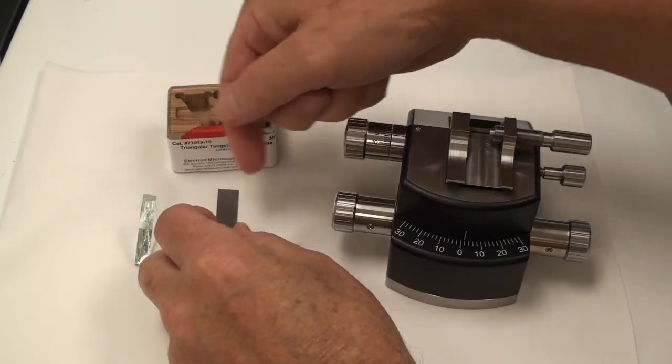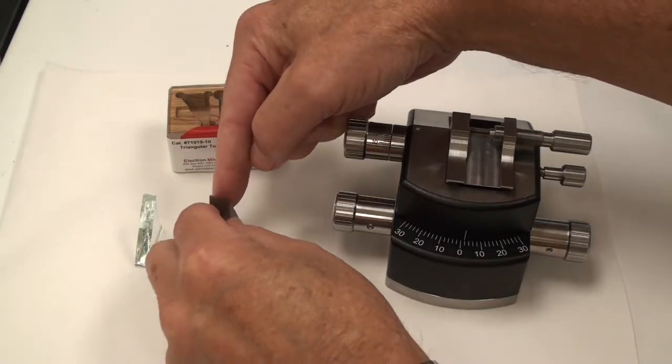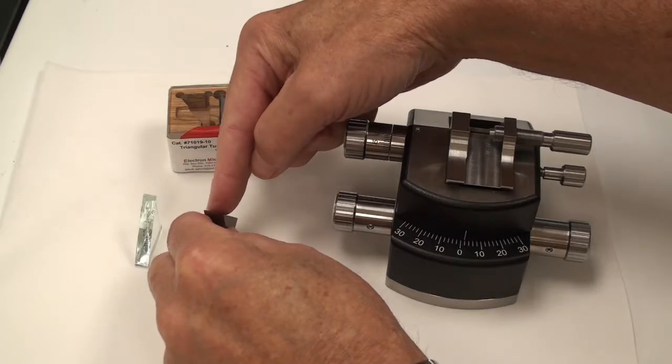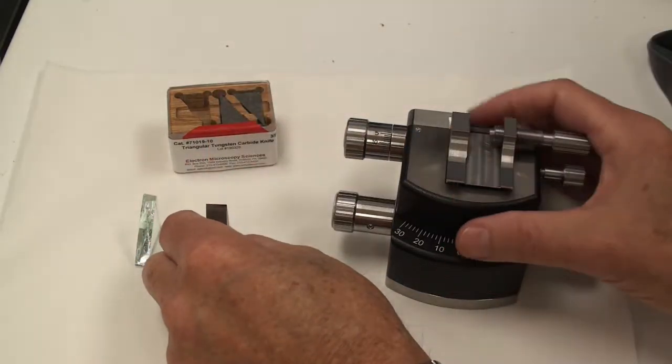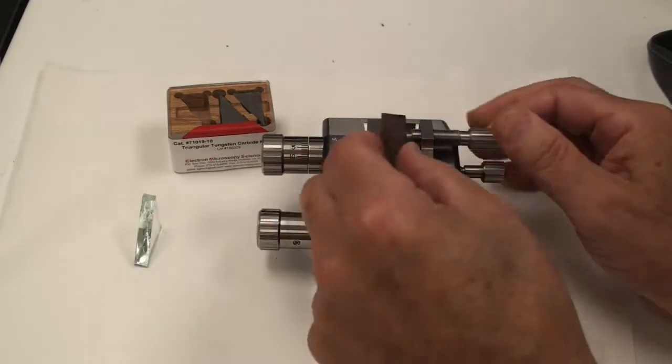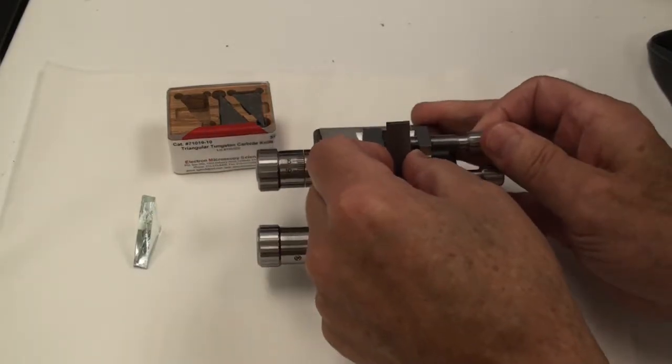One thing nice about this tungsten carbide knife, the DDK, is that it's flat across the back, and that way your block face is planar, so when you cut it with a diamond, it doesn't have edge and curvature to the block face.